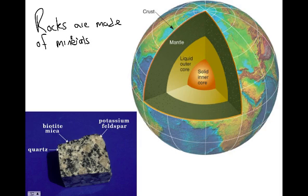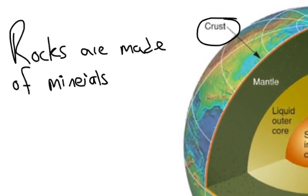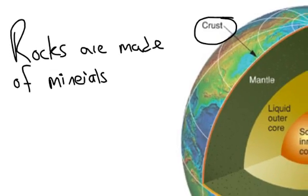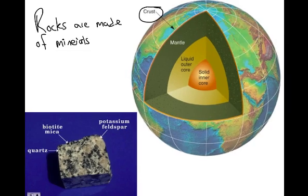When we talk about minerals and rocks, we're going to concentrate on the crust, because this is really where most rocks and minerals are found. There are rocks and minerals deeper in the Earth, but a lot of them melt with higher temperatures. The crust is where we get all of our resources from - it's where we dig out all the rocks and minerals we use in everyday life. The main takeaway point is that rocks are made of minerals; they're the main ingredients.